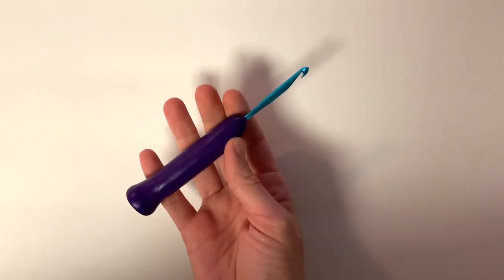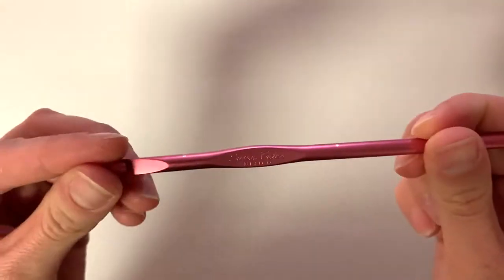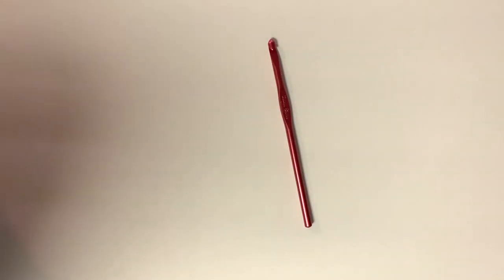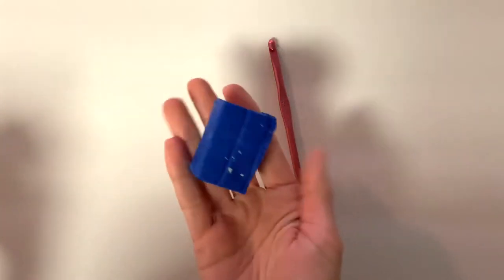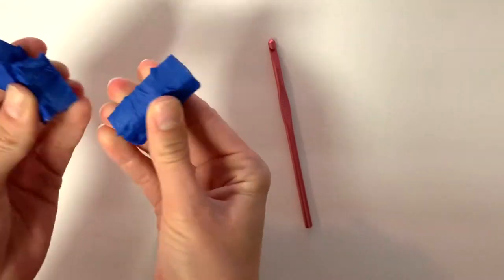It's the ergonomic shape so it will help any kind of tendinitis issues you might have. You need an aluminum hook because we will be putting it in the oven and then you also need some clay. This is Sculpey clay. I got this at Joann's and I'm just going to estimate how much I need.